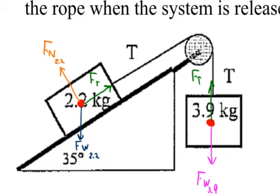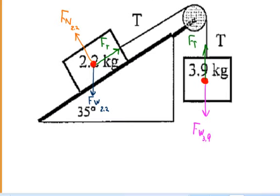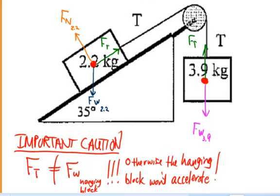If the tension equaled the weight, the hanging block would either move with constant velocity or remain stationary. The caution is that the tension is not equal to the weight of the hanging block; otherwise the hanging block won't accelerate. On tests — and these problems will appear on upcoming tests — someone is going to make the mistake of saying that the string tension and the weight of the hanging block are equal to each other, and they are not.